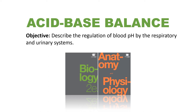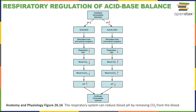In this video I will describe the regulation of blood pH by the respiratory and urinary systems. The respiratory system provides a short-term mechanism to maintain pH homeostasis by regulating the excretion of carbon dioxide. We can either increase or decrease the pulmonary ventilation rate in order to regulate the rate of external respiration, to control the rate at which carbon dioxide is removed from the body.